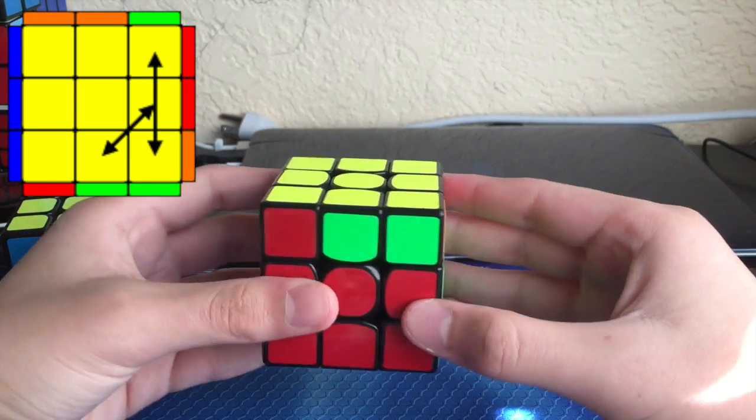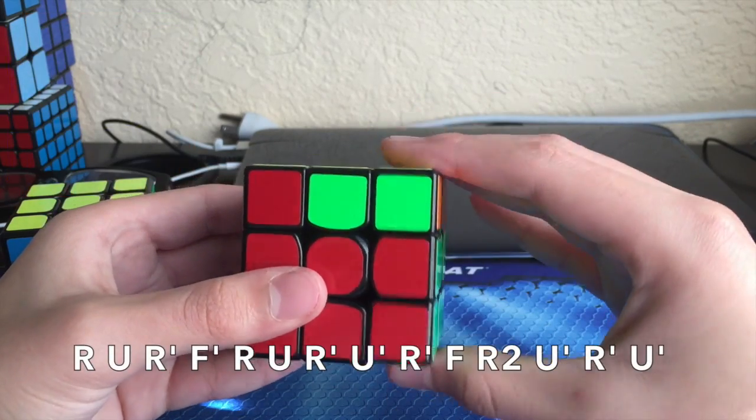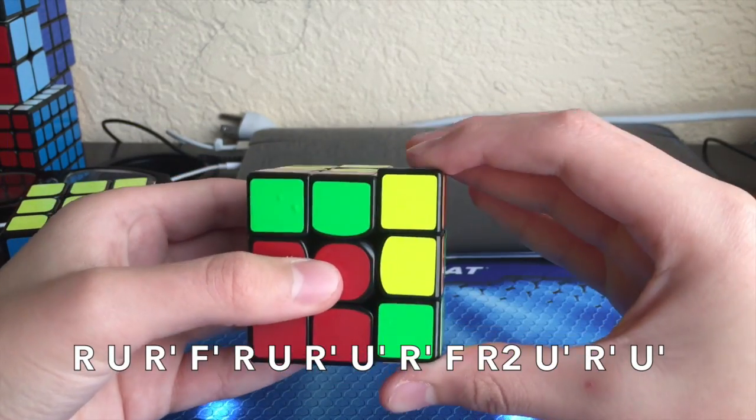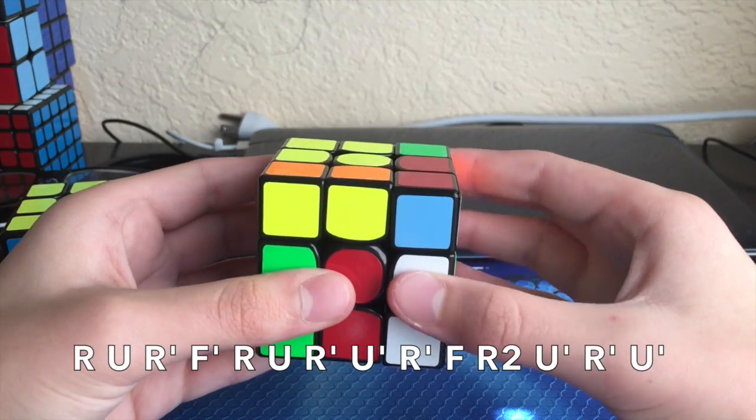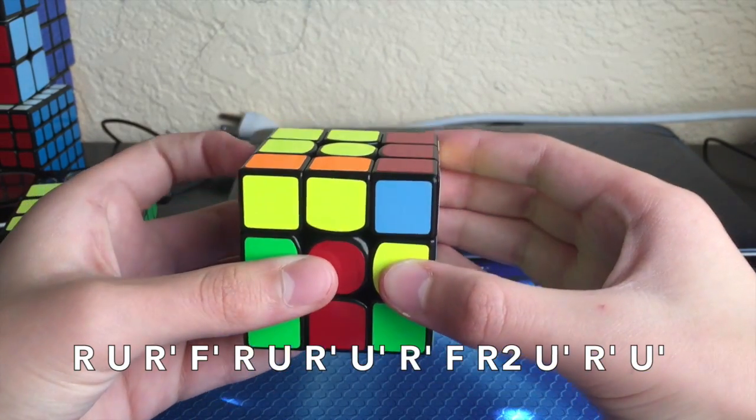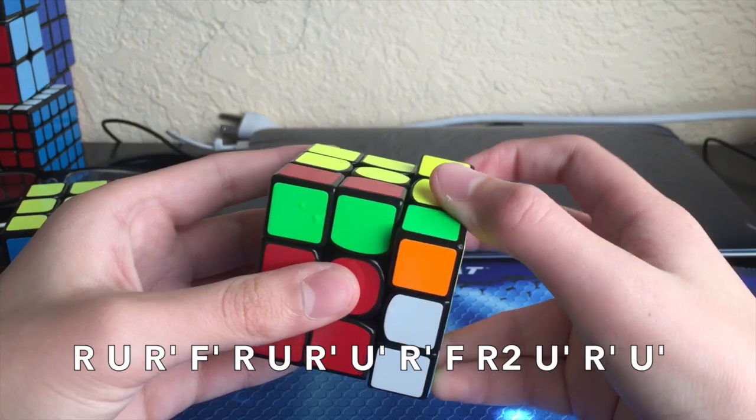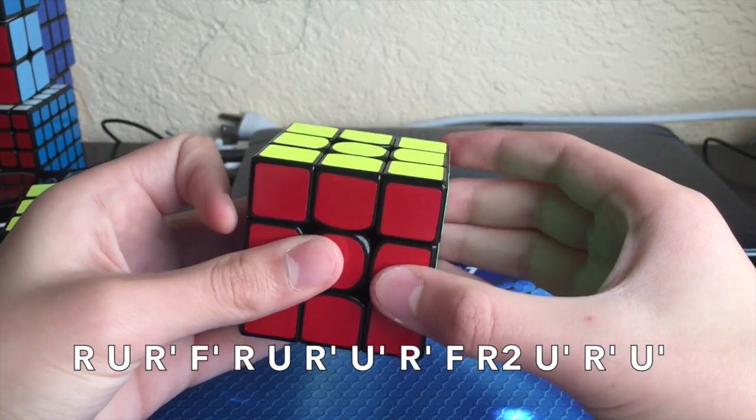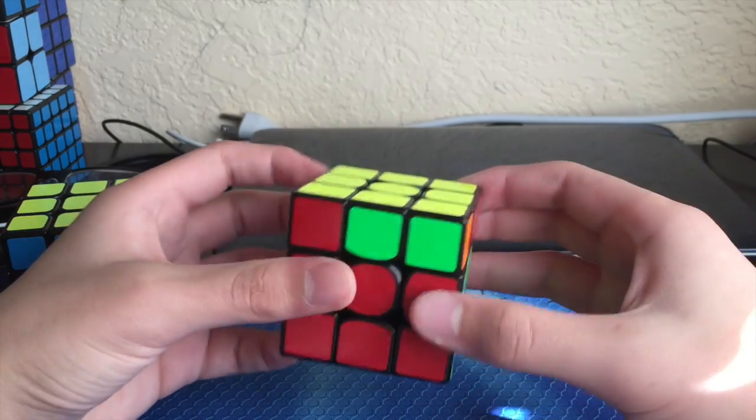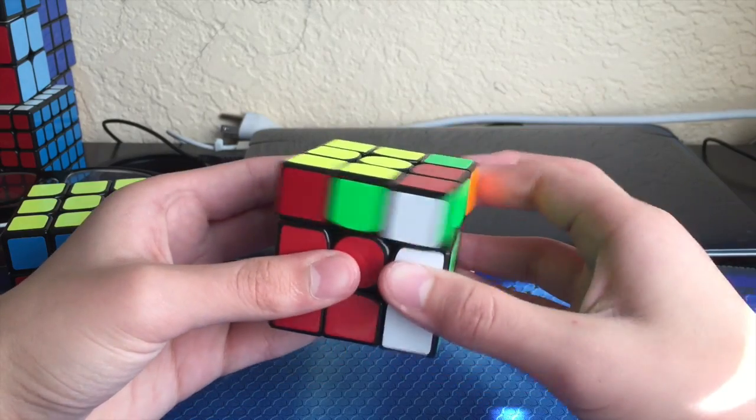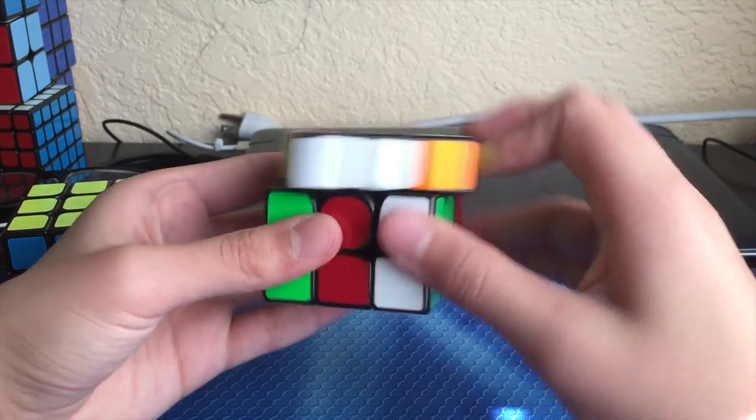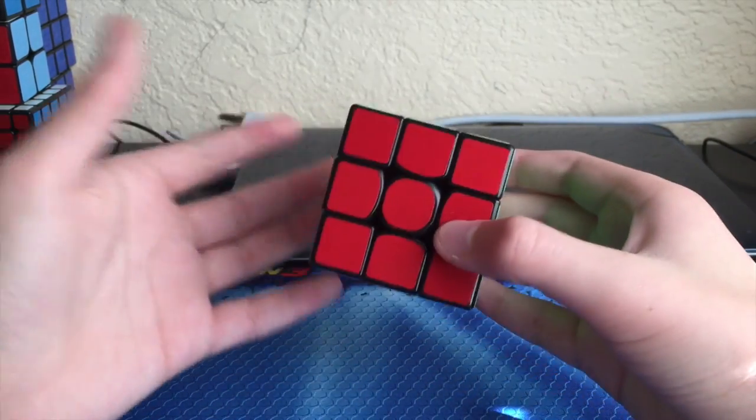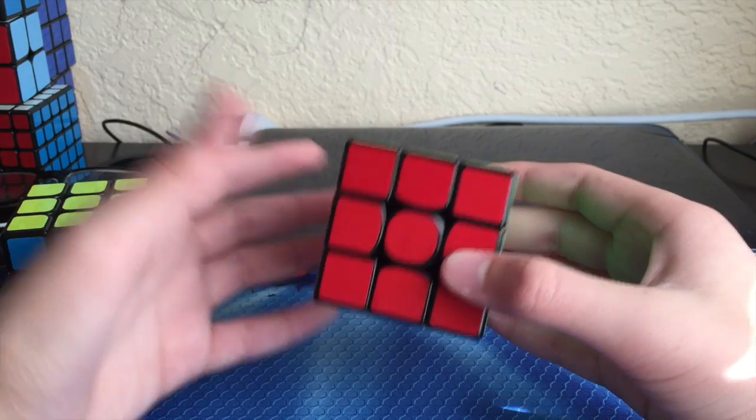You hold the cube like this, and the algorithm is... Execution is extremely easy because all you have to do is these setup moves, and then you do the T-perm until it's solved - not the whole T-perm, but most of it.